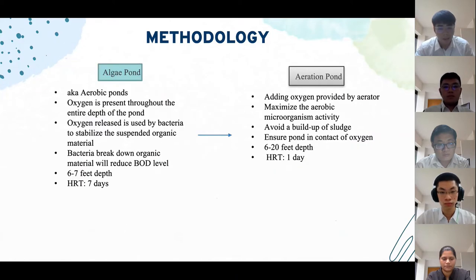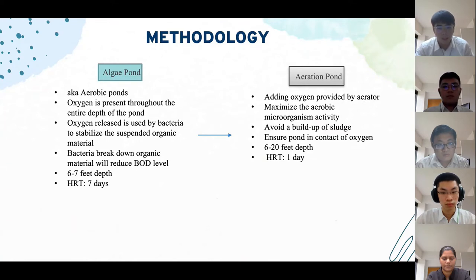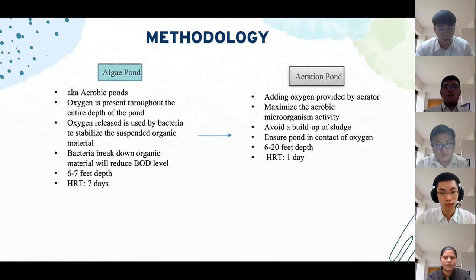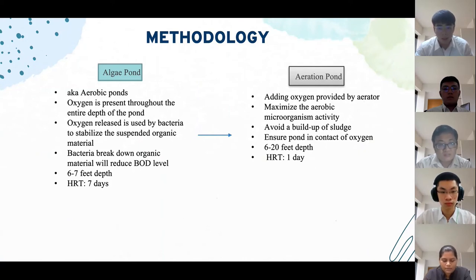Proceeding to the algae pond, also known as the aerobic pond: these are ponds where oxygen is present throughout the entire depth at all times to promote photosynthesis of algae and microorganisms. The oxygen released from photosynthesis is used by bacteria to stabilise the suspended organic material in the wastewater. Bacteria use the oxygen to break down organic matter into simpler compounds, reducing the BOD level. The algae pond is usually 6 to 7 feet deep with an HRT of 7 days.